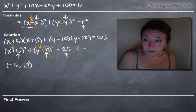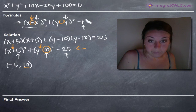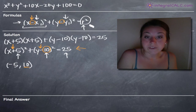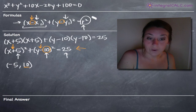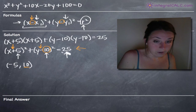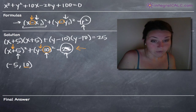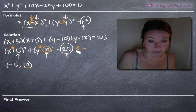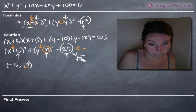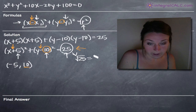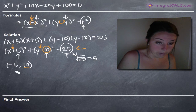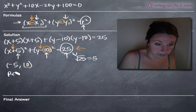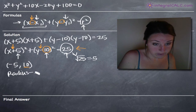Our radius comes from the right-hand side of the equation, but notice that the right-hand side is the radius squared. So to get the radius from 25, we take the square root of 25, which is 5. Our radius is 5.